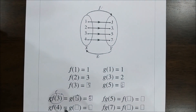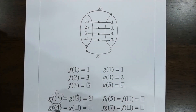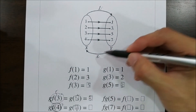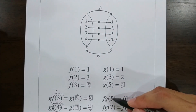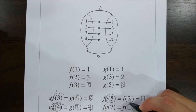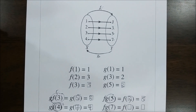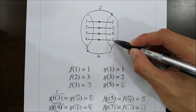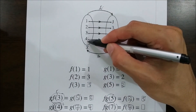Next, gf(4): f(4)=7, then g(7)=4. So gf(4)=4. For the composite fg: g(5)=3, then f(3)=5. So fg(5)=5. And g(7)=4, then f(4)=7. So fg(7)=7.